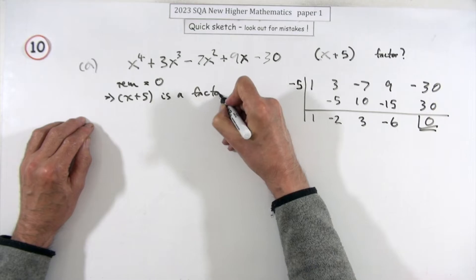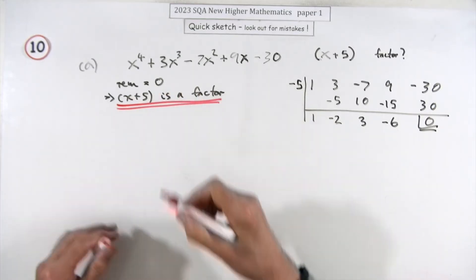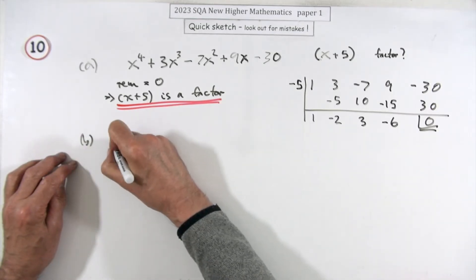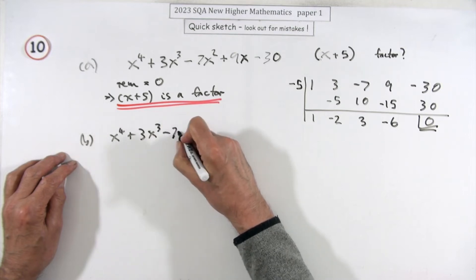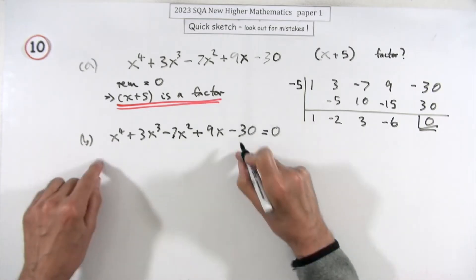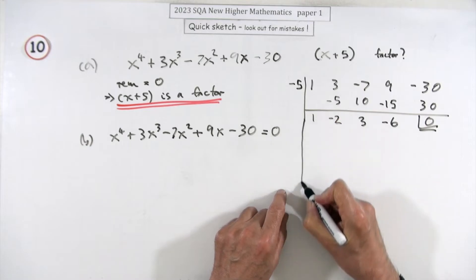In part b we're going to have to solve x³ + 3x² - 7x + 9x - 30 equal to zero. That means factorize it. You've still got a cubic here, so you just keep on going.